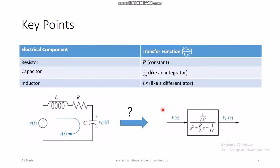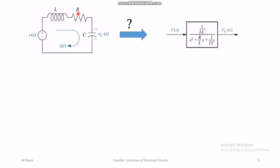This is the circuit and the transfer function I will derive. First, V_C over V — the ratio of Laplace transform of output over input — can be written as V_C over I multiplied by I over V. I write this voltage ratio in terms of voltage-current ratios because I am going to use the Laplace transforms of the impedances of all three components.